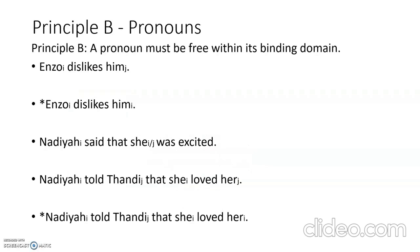Principle B is about pronouns: a pronoun must be free within its binding domain, meaning it must not be bound within its binding domain. For 'Enzo dislikes him' where him refers to a different entity — say, James — the binding domain is the whole sentence, him refers to an entity outside the binding domain, so it is free and obeys principle B. But if Enzo and him are co-indexed — referring to the same entity — him is bound within its binding domain, which violates principle B.